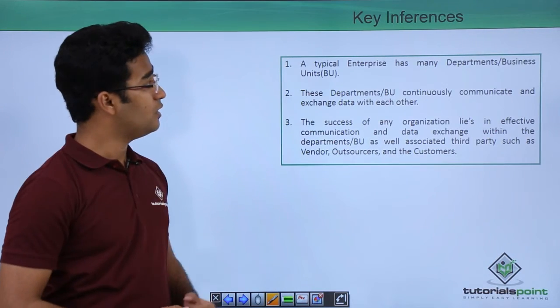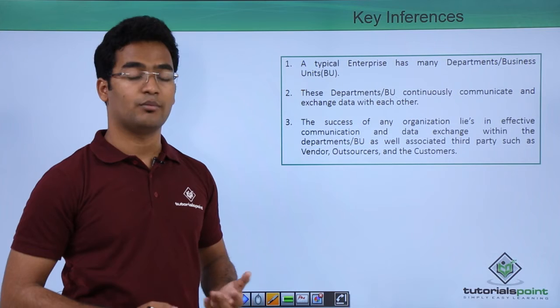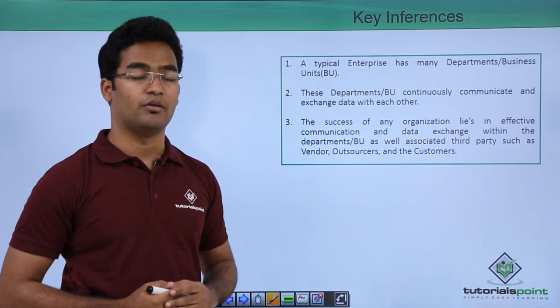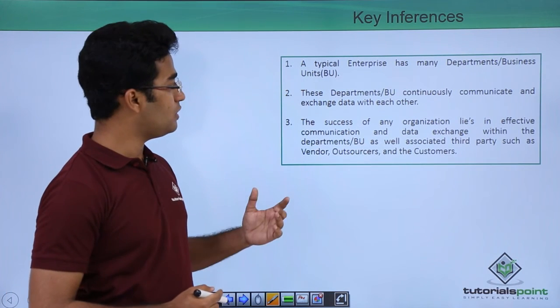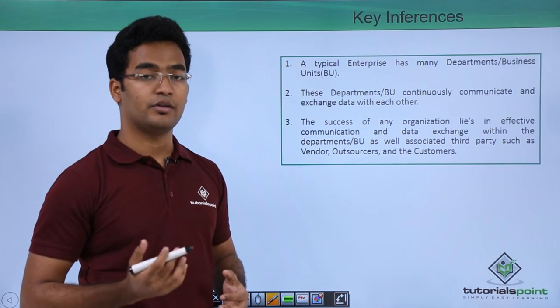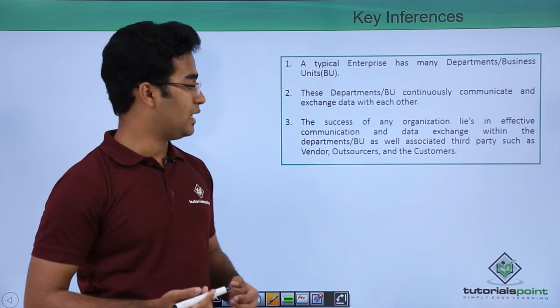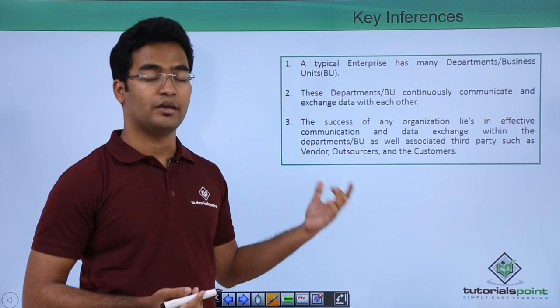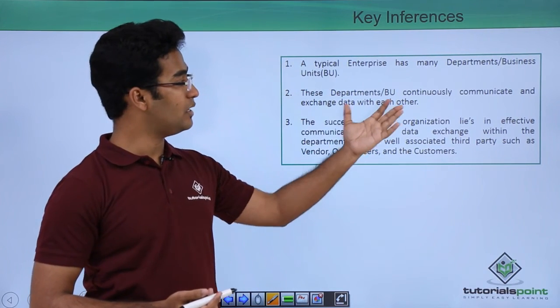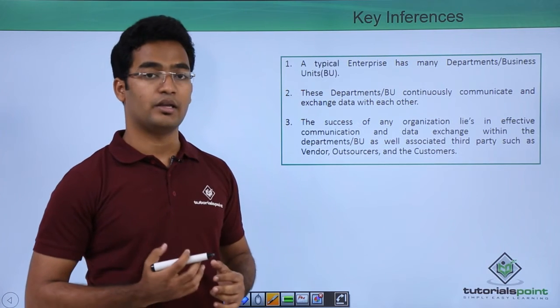Now let us see the key inferences from this business model. We see a typical enterprise has different business units. We saw there was sales and distribution module, moreover there was production planning and inventory. Similarly, multiple business units are there in an organization.